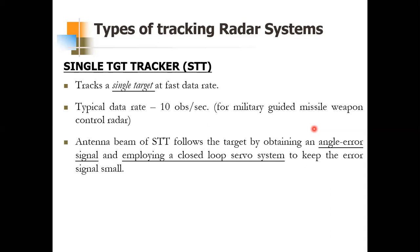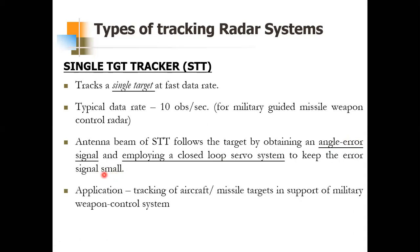To reduce this angle error, we have a closed-loop servo system which aligns the position of the antenna to keep the angle error signal minimized. Most of this chapter is concerned with this type of tracker. The application of the Single Target Tracker is aircraft or missile targets in support of military weapon control systems.